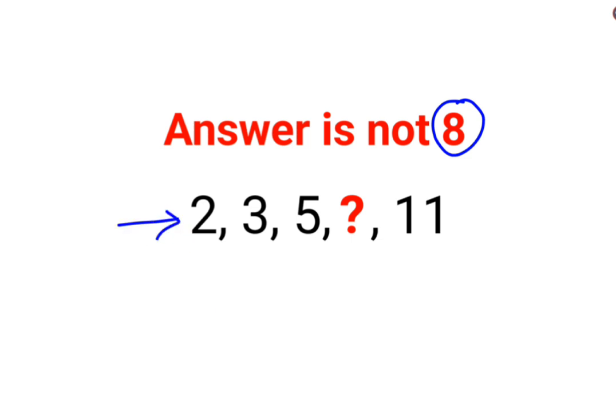If you look at this entire series, all of these are basically prime numbers. And if you look closely, 2, 3, 5 and the next prime number which comes in the series is 7. After 7, the next prime number which comes is 11. So here we can say the value of question mark is supposed to be just 7.